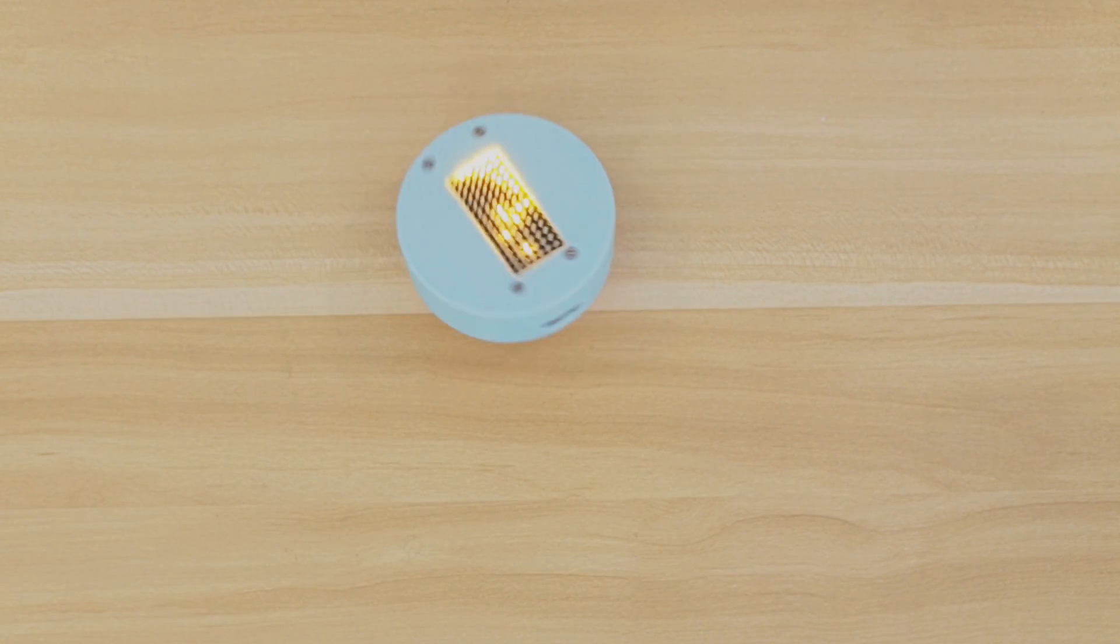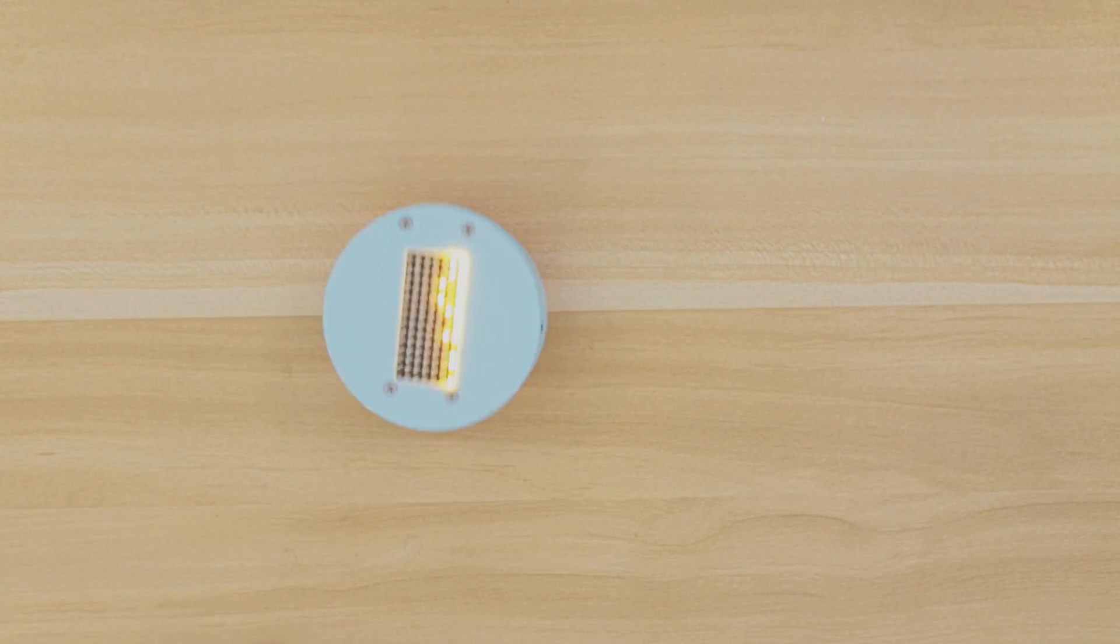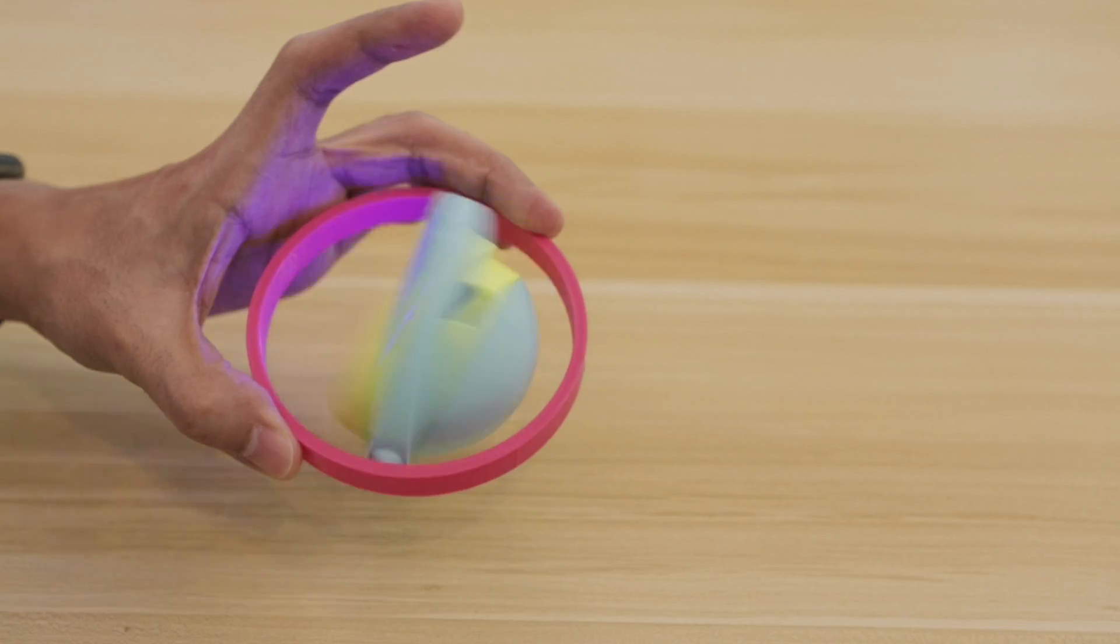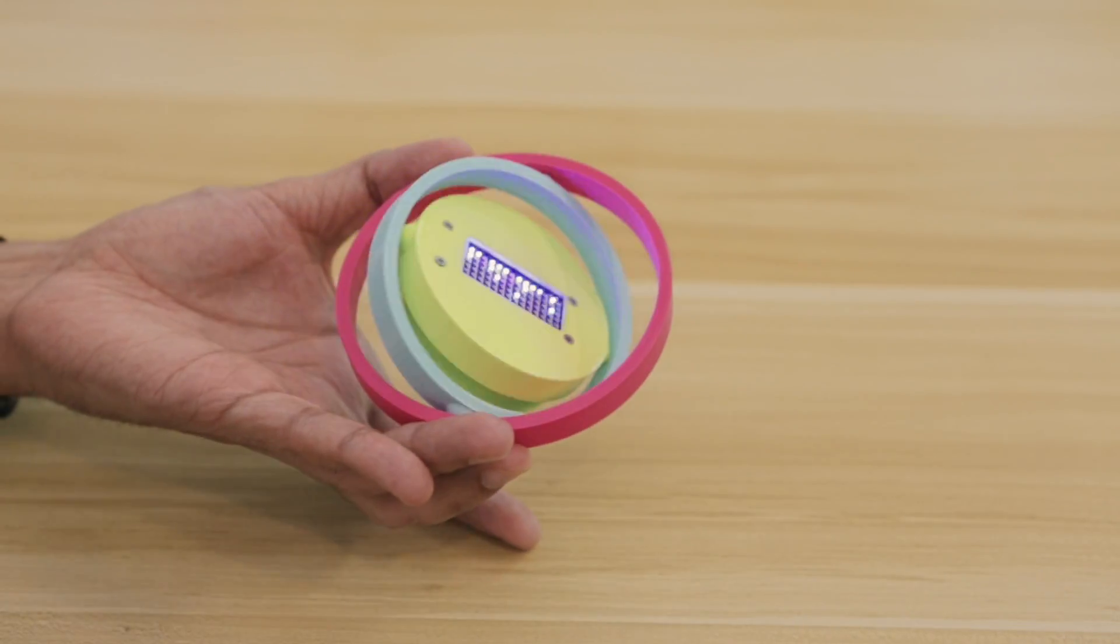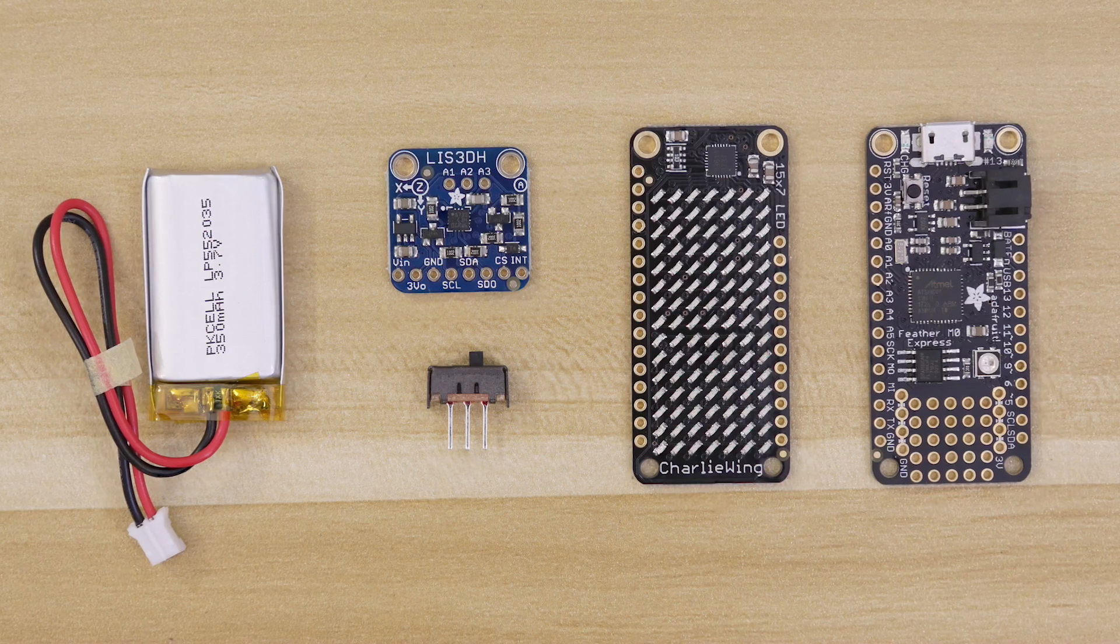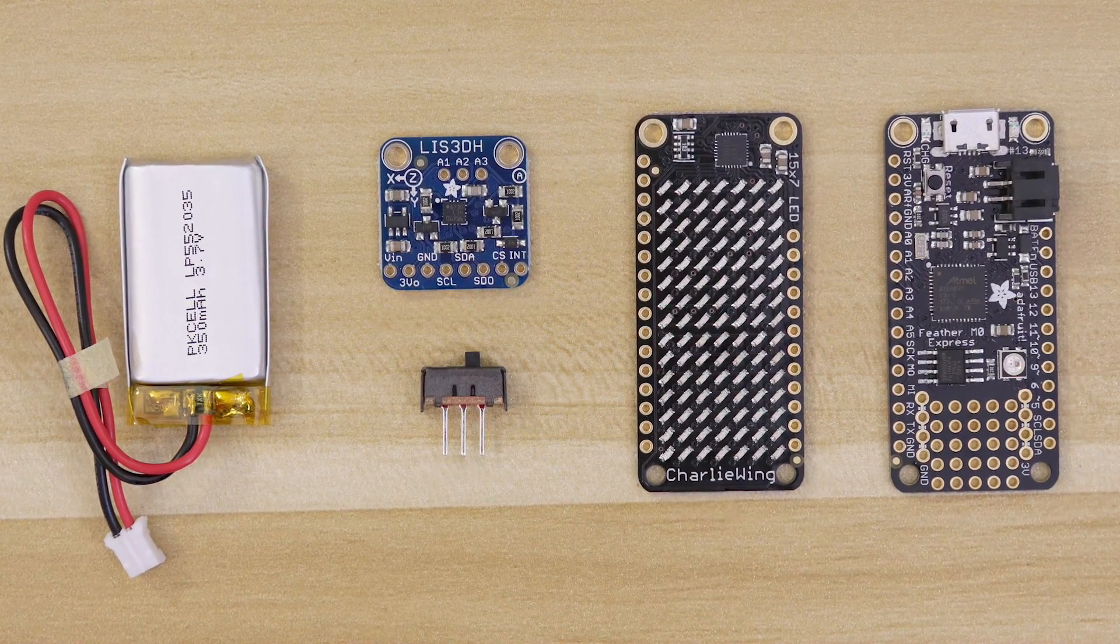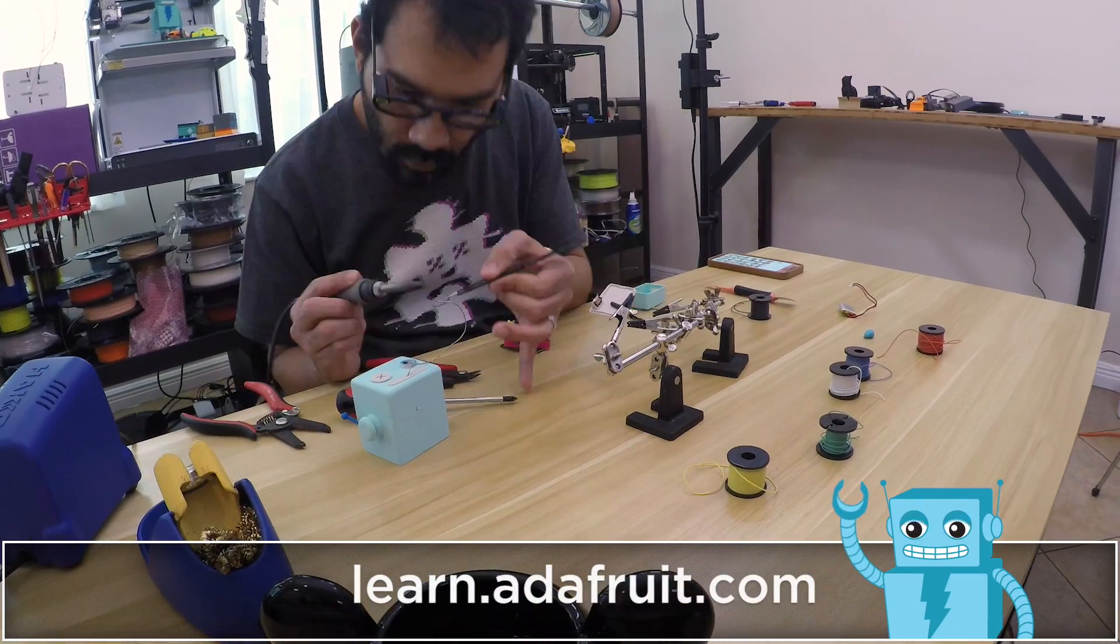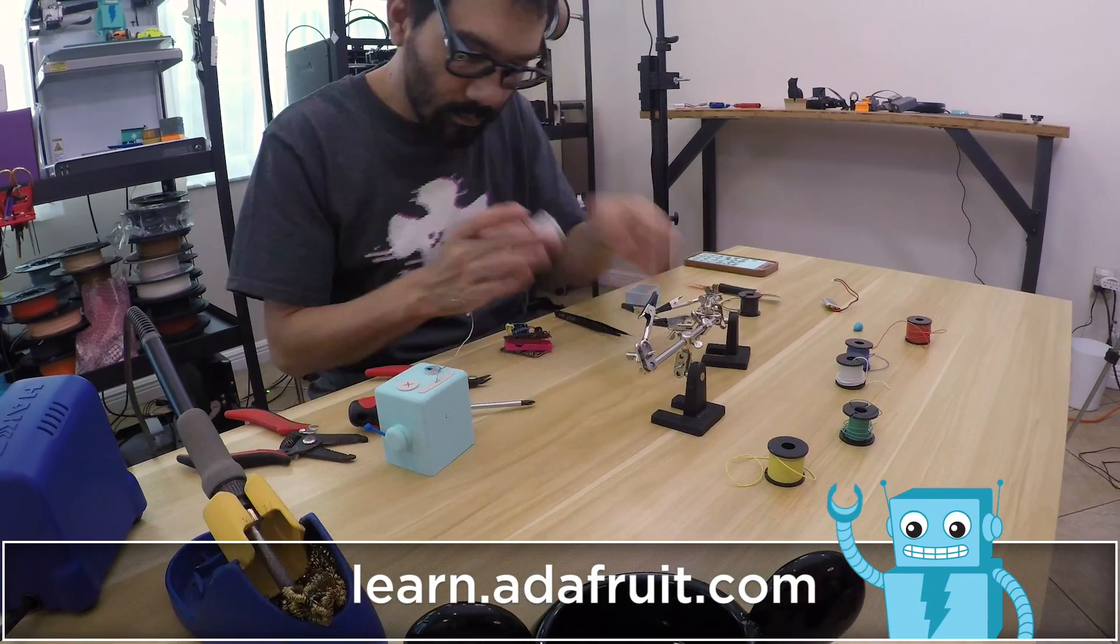We designed and 3D printed a special enclosure to allow the circuit to teeter back and forth. We also made a gyroscope so you can spin it on different axes. The 3D files are free to download and you can get the electronics from Adafruit. If you'd like to build this project, check out the full tutorial on the Adafruit learning site.